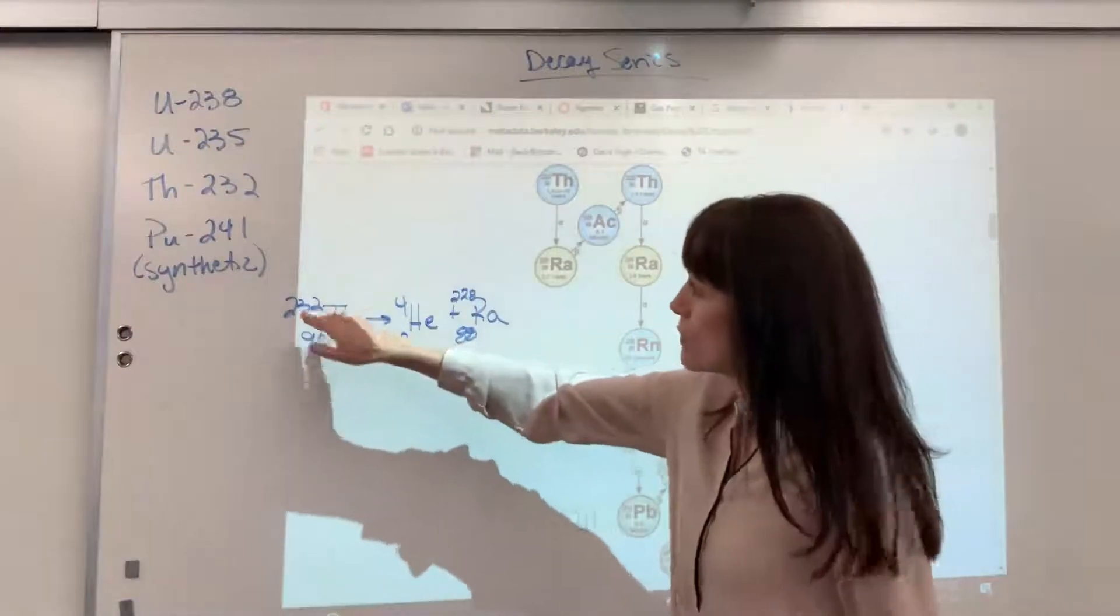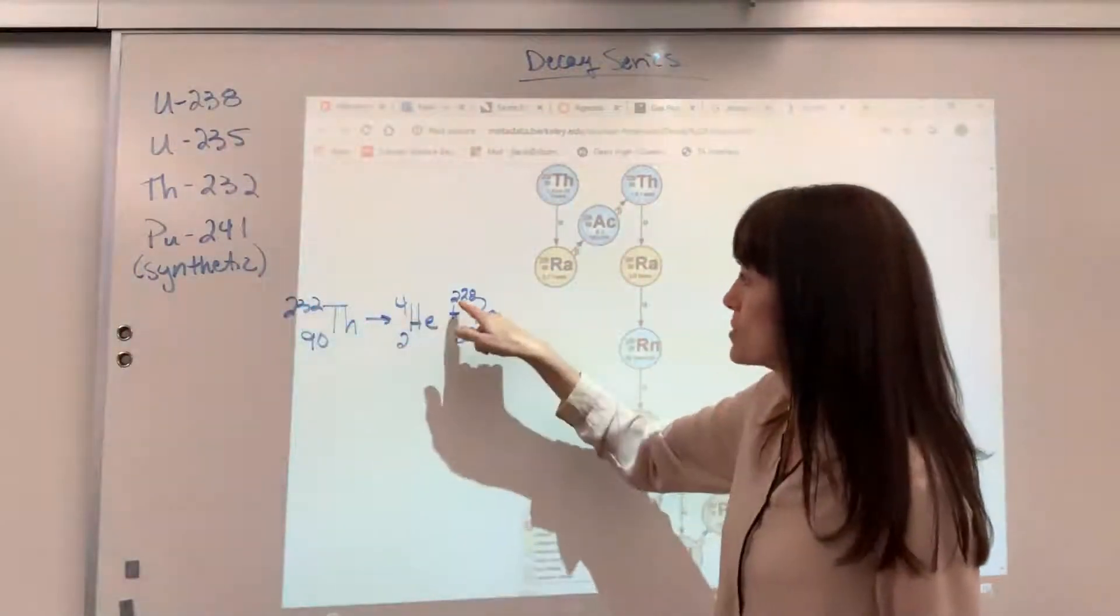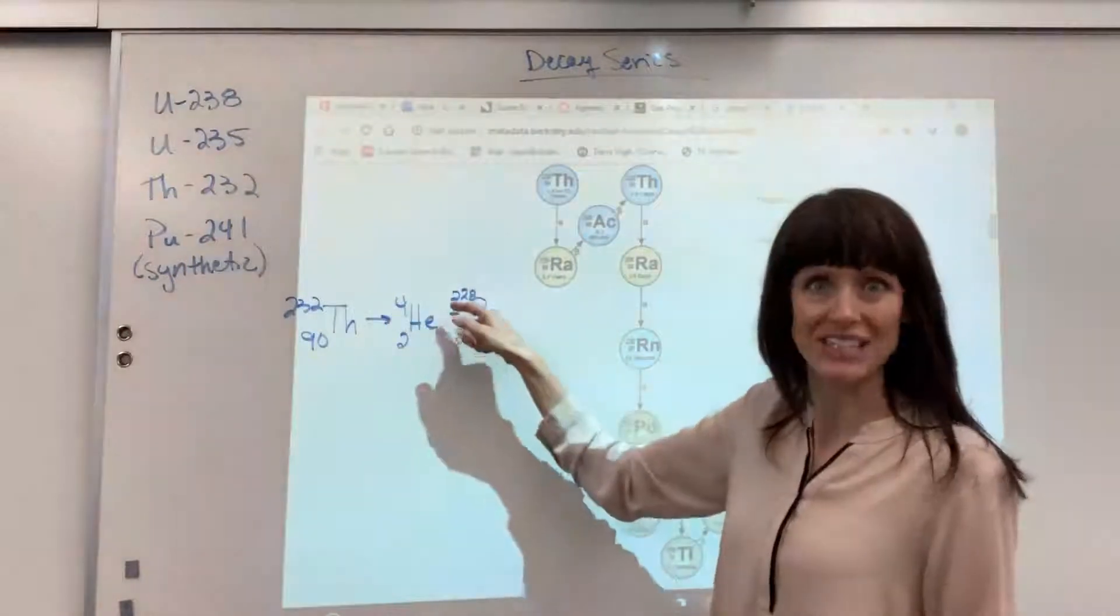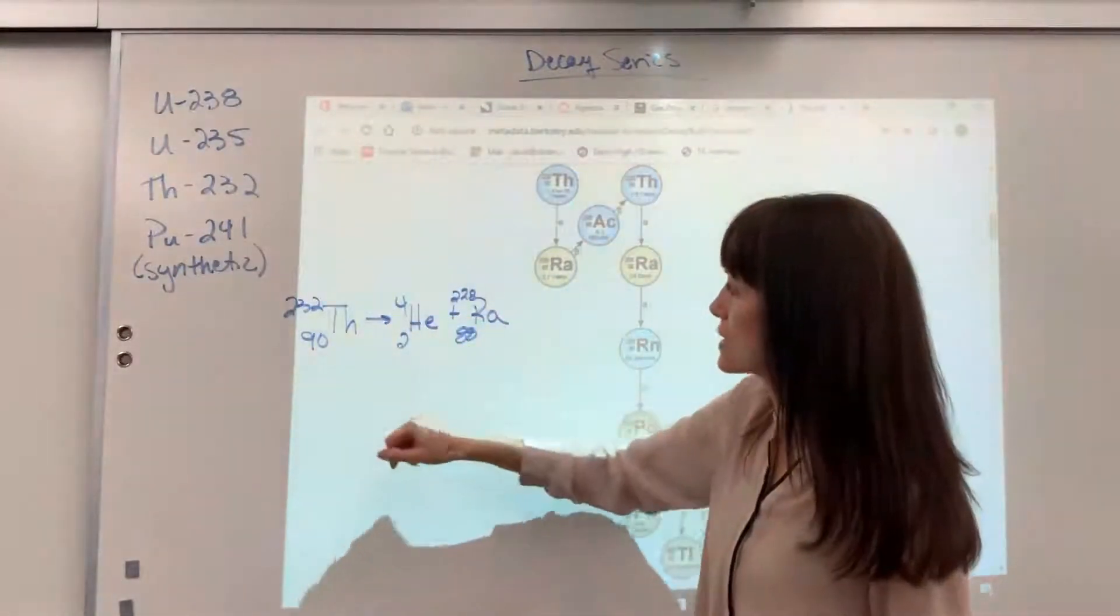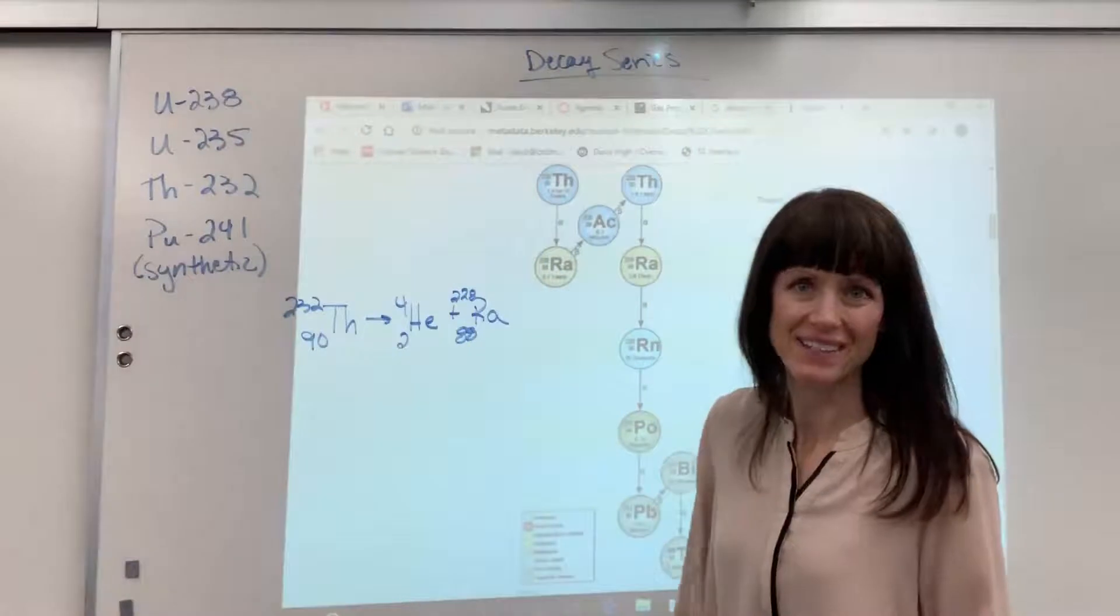Let's add. We've got 232 on the reactant side, 4 plus 228, 232. We've got 90 on the reactant side, 2 plus 88 is 90 on the product side.